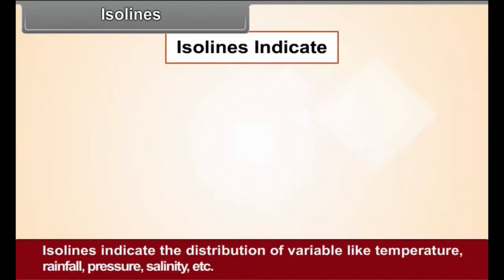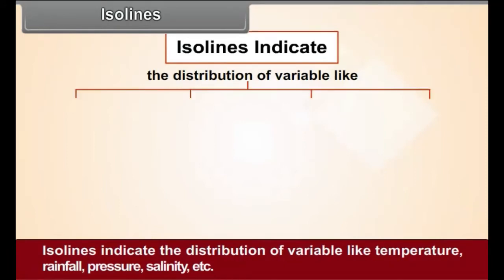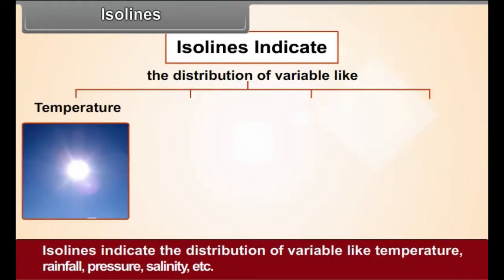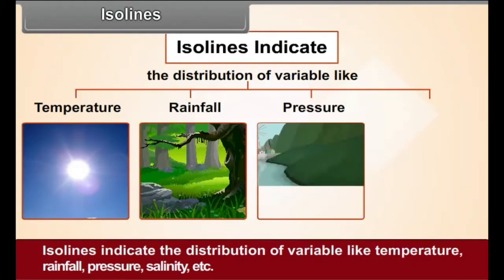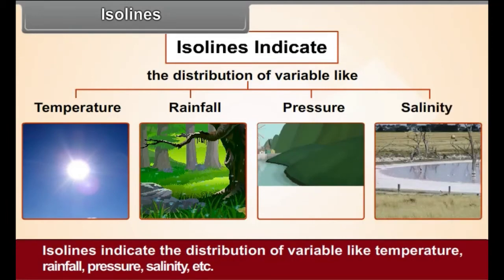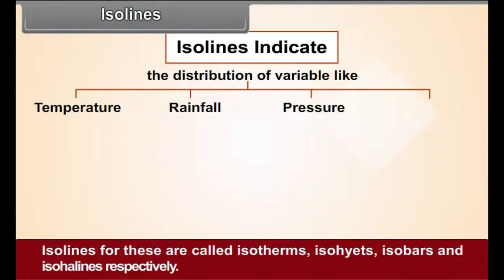Isolines indicate the distribution of variables like temperature, rainfall, pressure, salinity, etc. Isolines for these are called isotherms, isohytes, isobars and isohalines respectively.